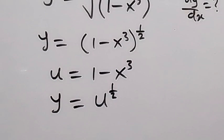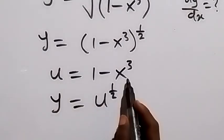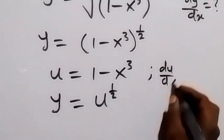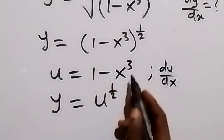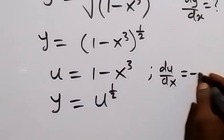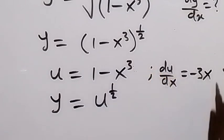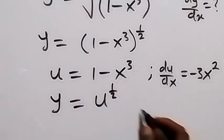We can differentiate this using the chain rule. We differentiate u with respect to x. The derivative of the constant 1 is 0, and when we differentiate x cubed we bring down the power: 3 minus 1 gives x squared. So du/dx equals minus 3x squared.